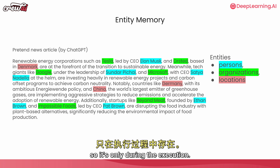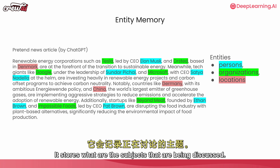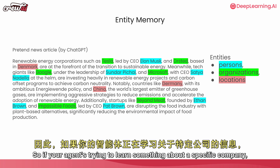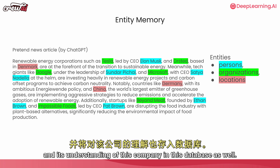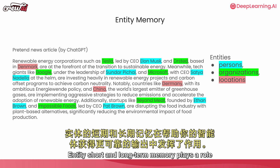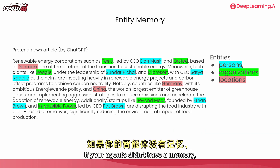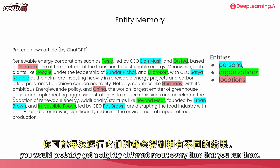Entity memory also plays a role here. It is also short-lived, existing only during execution. It stores the subjects being discussed — so if your agent is trying to learn something about a specific company, it might store that company as an entity and its understanding of that company in the database as well. Together, entity, short-term, and long-term memory help our agents get more reliable outcomes.